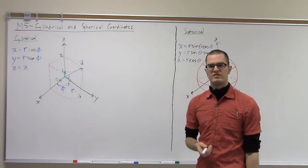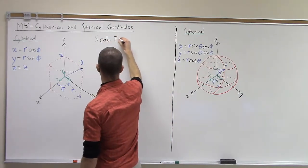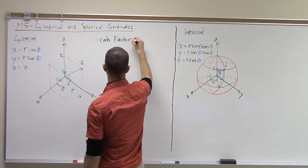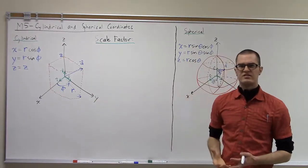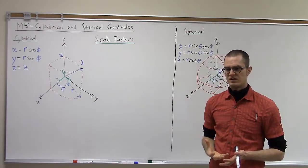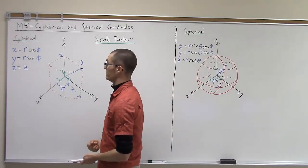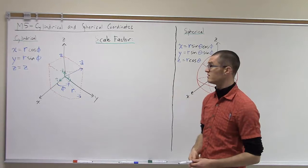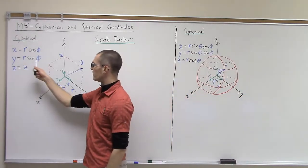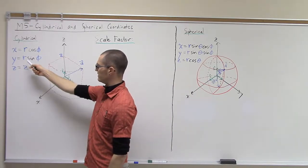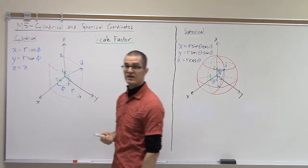Next, we'll talk about what's called a scale factor. The scale factor has to do with the fact that the units of our coordinates in a general curvilinear coordinate system do not necessarily correspond to distance. In the cylindrical coordinate system, we have r, phi, and z. The units of r and z correspond to distance, but the units of phi are in radians — they're angles.